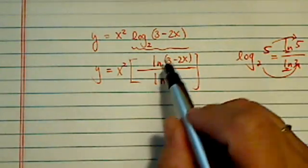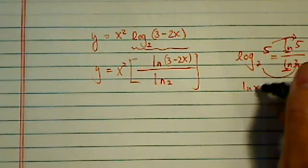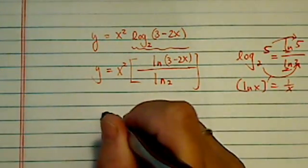Once we change the base, the reason we're changing into natural log is, of course, derivative of natural log is very easy. It's 1 over x, and we want to keep that.